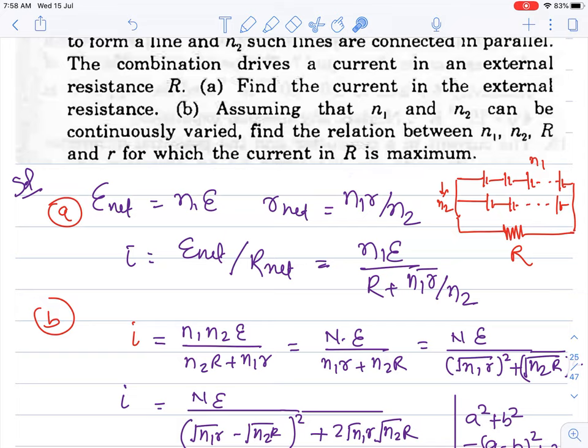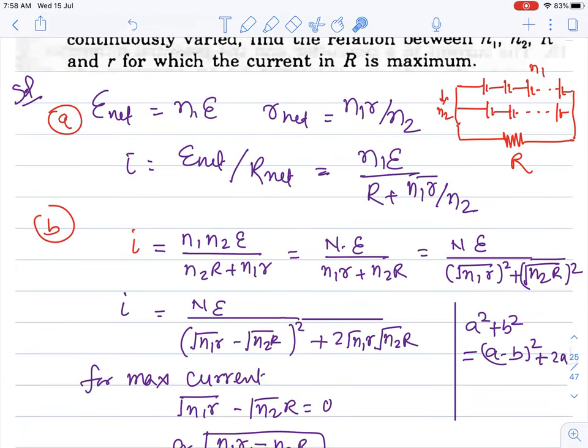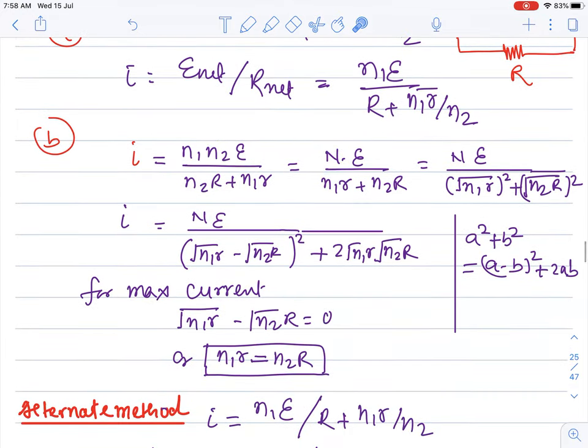Second part: Assuming that n₁ and n₂ can be continuously varied, find the relation between n₁, n₂, r and R for which the current in external resistance R is maximum. Current equation: I wrote n₂ on top. We can write n₁n₂ as capital N. Looking at the denominator term, we can square it and separate the terms.